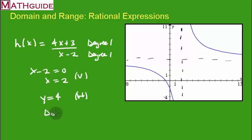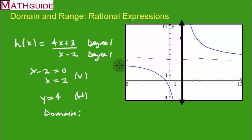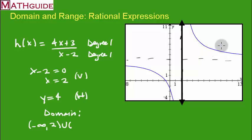For the domain, the left branch goes from negative infinity approaching x equals 2, and the right branch goes from 2 to positive infinity. Those two intervals combine to give the complete domain.